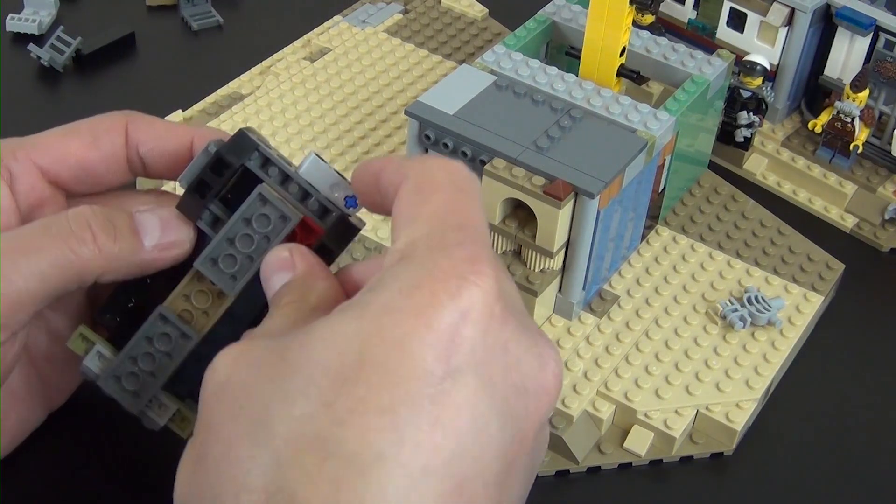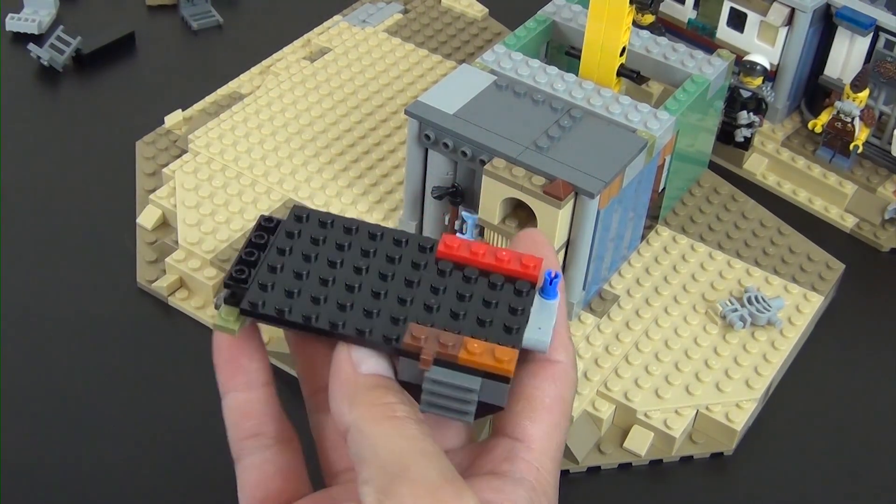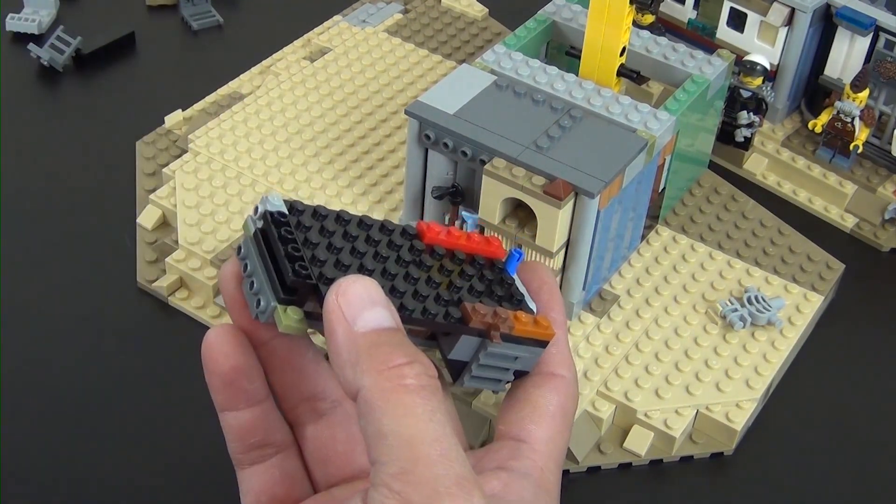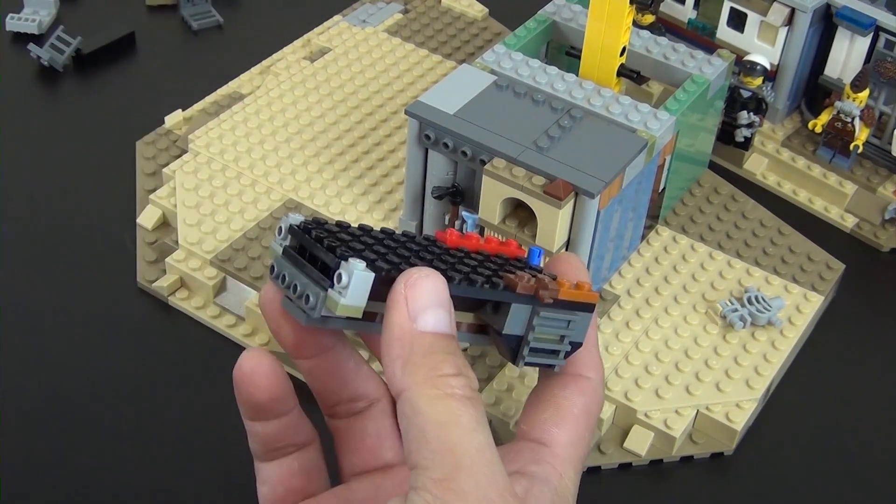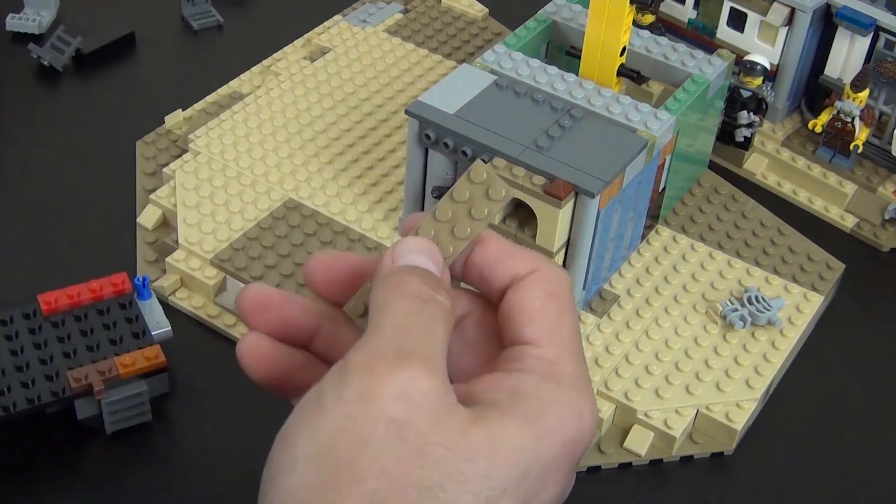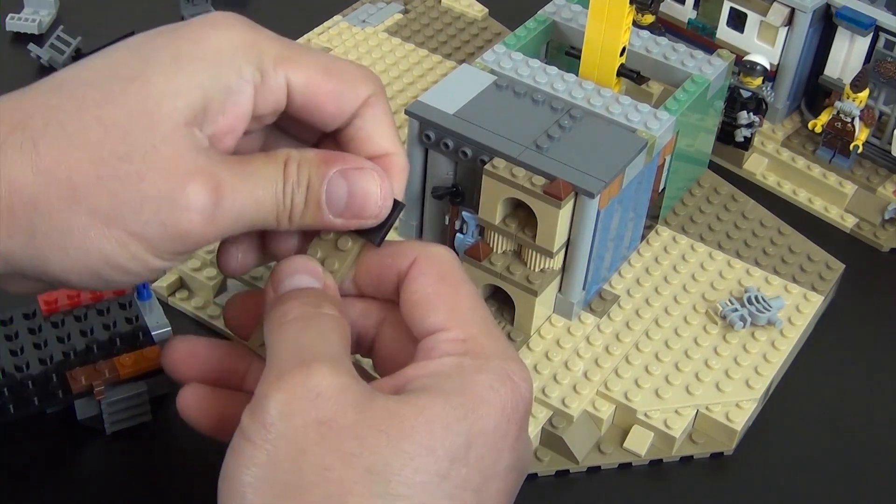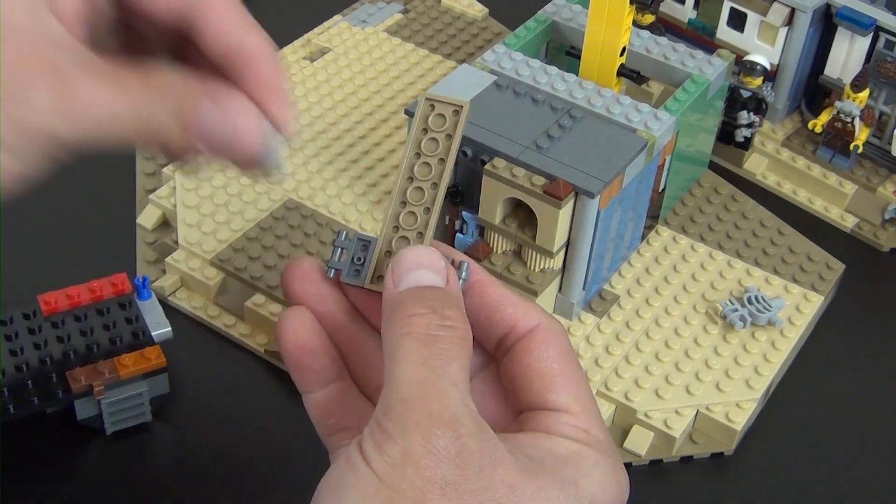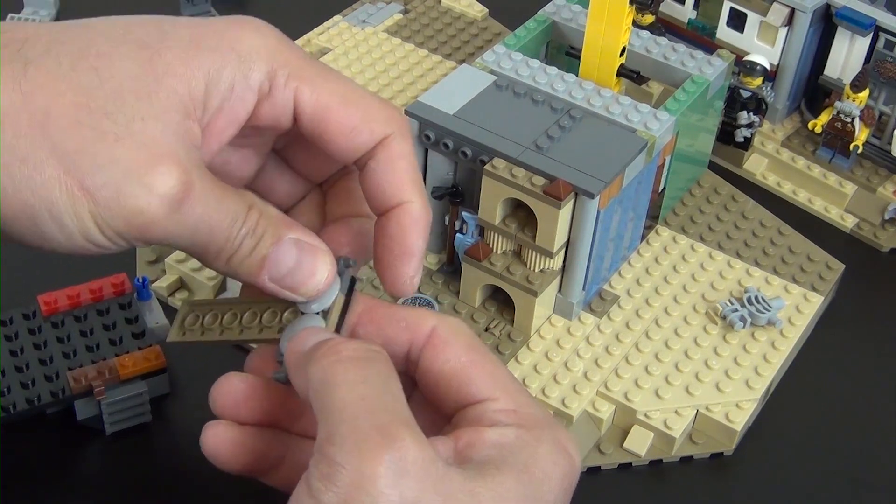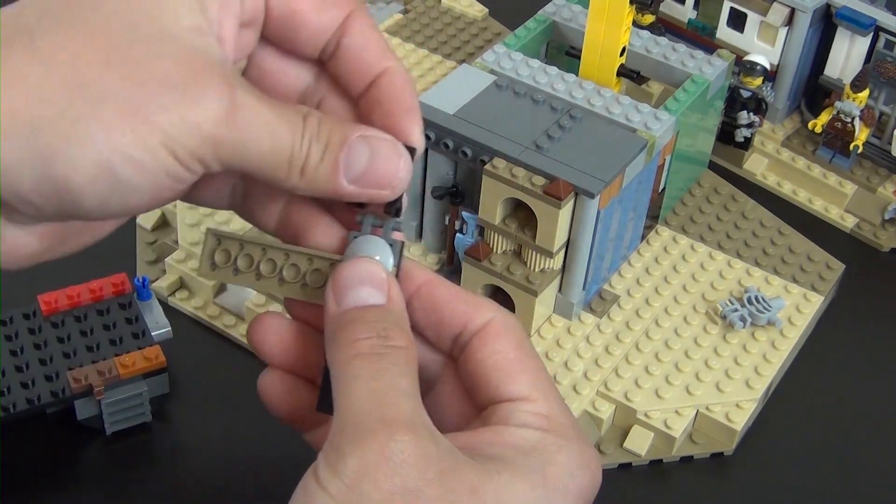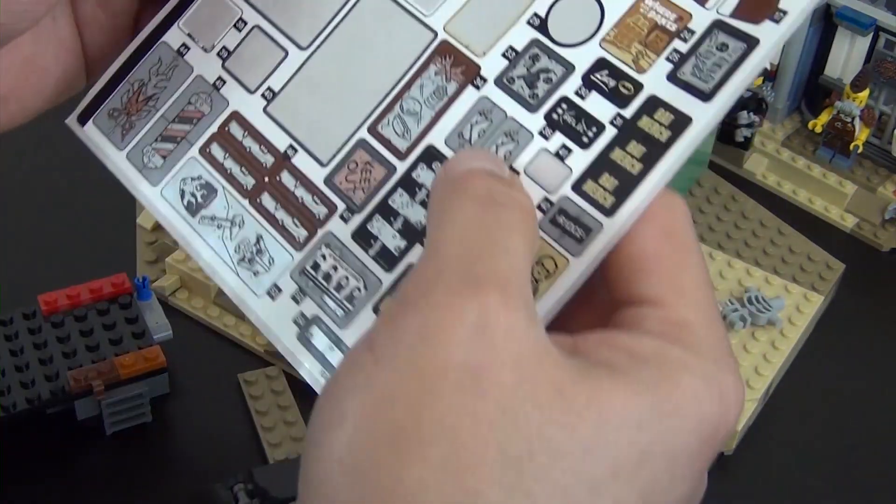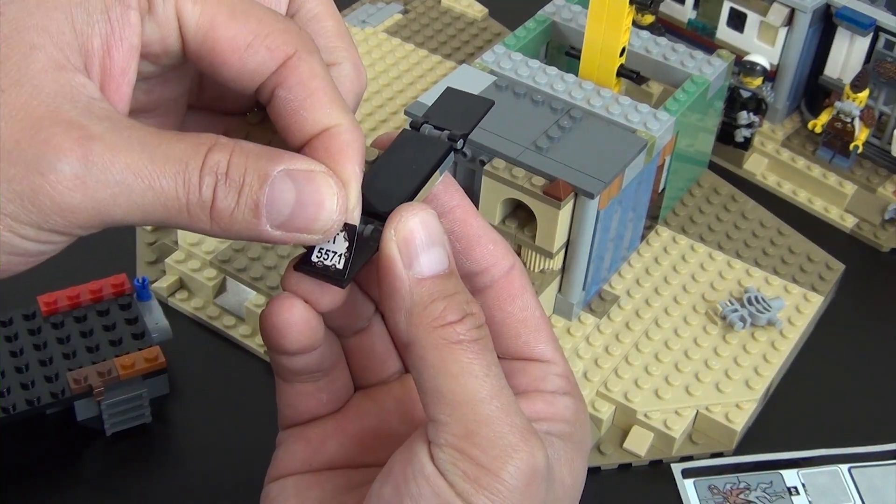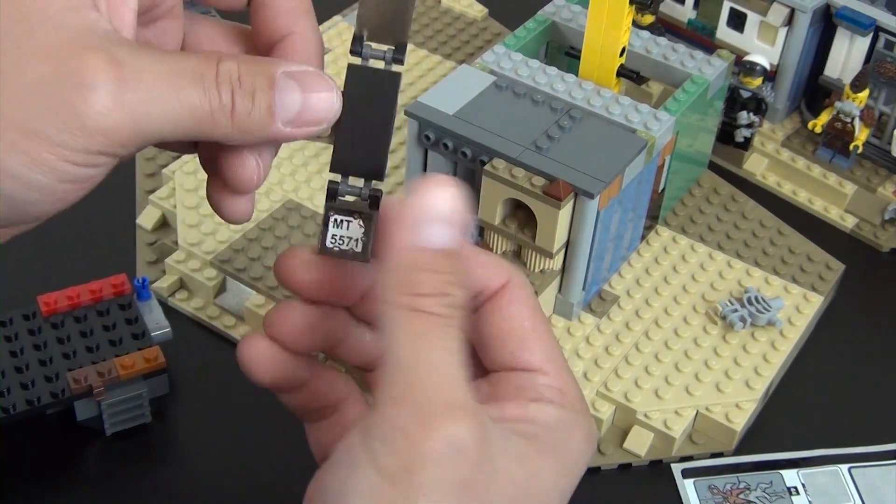Slide right there, this piece here, those two pieces here. Turn it back around, got a technical part there. And I've got pieces falling off. All right, two headlight bricks. Where are we at? One and two.